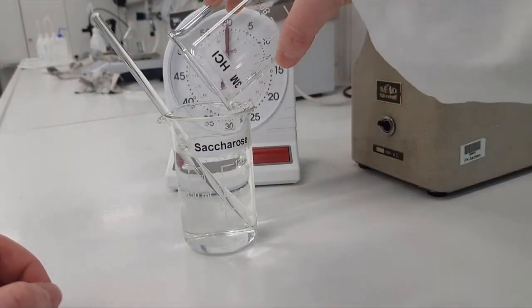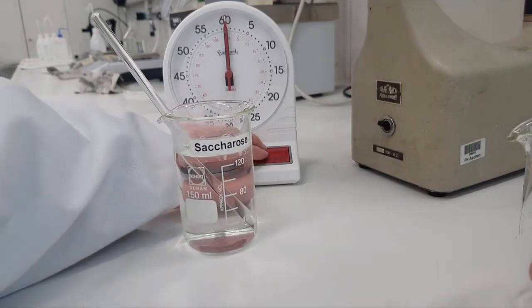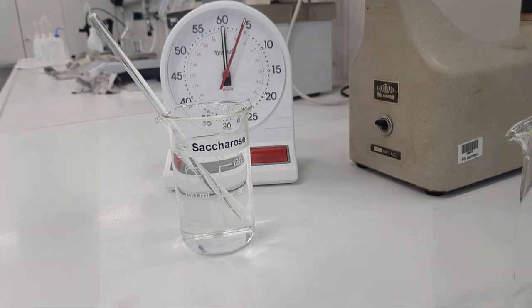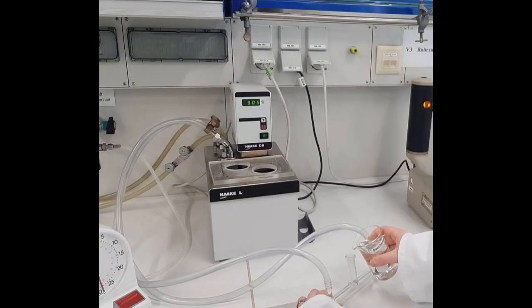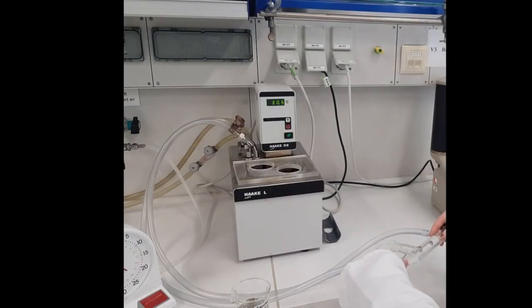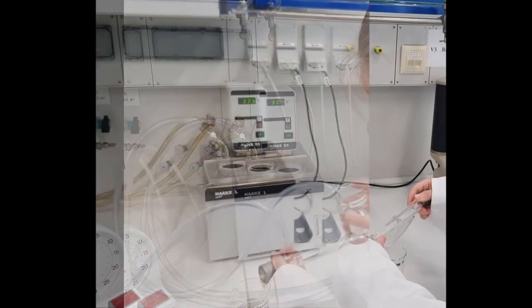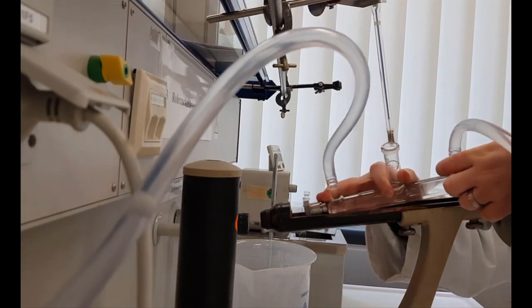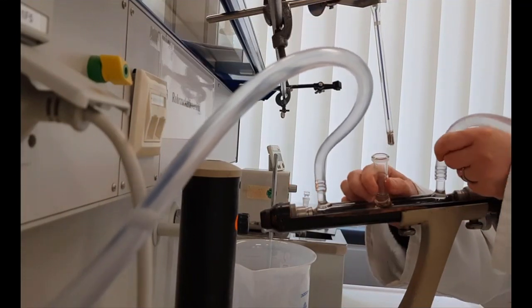Start the reaction by adding the acid to the sugar solution and start the clock. Rinse and fill the cuvette with the reacting solution, making sure there are no more air bubbles in the cuvette. Insert the cuvette into the polarimeter.